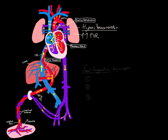That blood then goes down the descending aorta — a mix of oxygenated and mixed oxygenation blood — and feeds the rest of the body. Some of that blood returns to the placenta via the umbilical arteries, which come off the internal iliac arteries. So deoxygenated blood returns to the placenta by the umbilical arteries, undergoes gas exchange, and comes back in through the umbilical vein. That's really the fetal circulation.